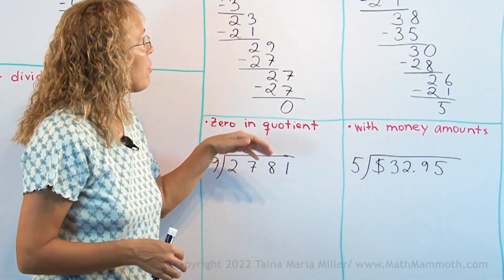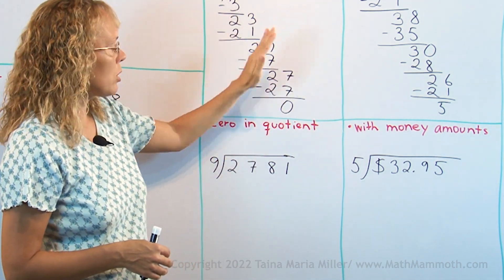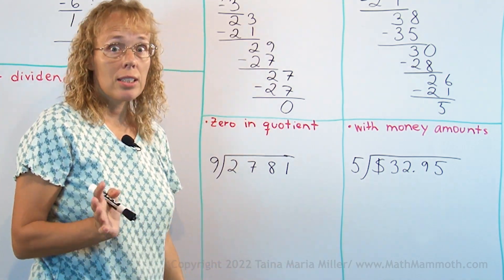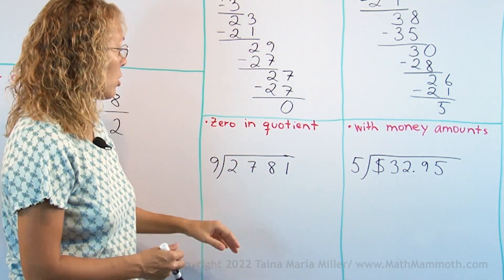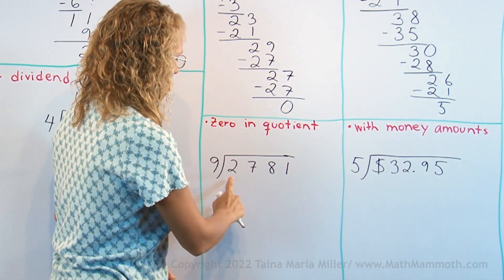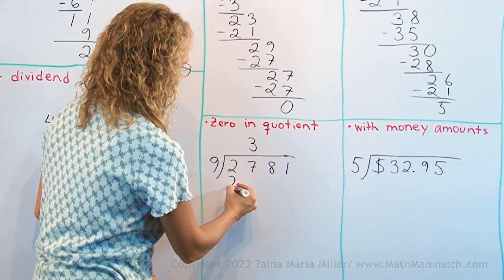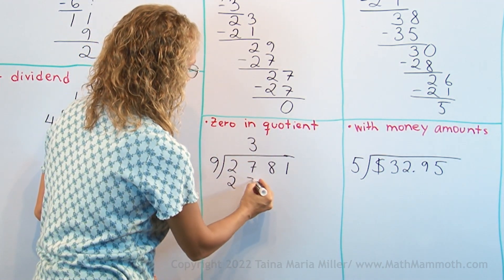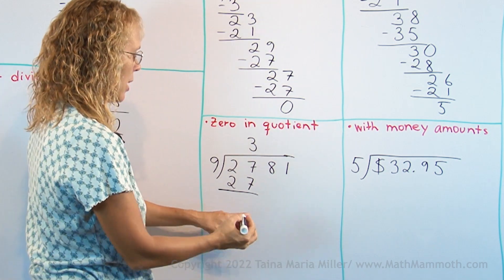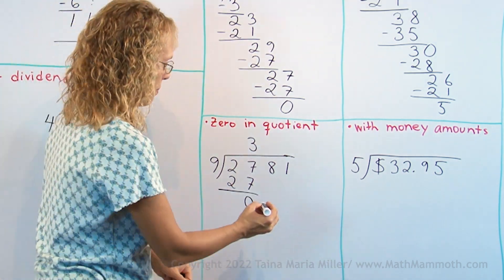But you can still follow this method too — just subtract and multiply and find the remainders. It'll still work. I'll show you. 9 goes into 27, like I said, 3 times. 3 times 9 is 27, subtract, get 0, drop down 8.